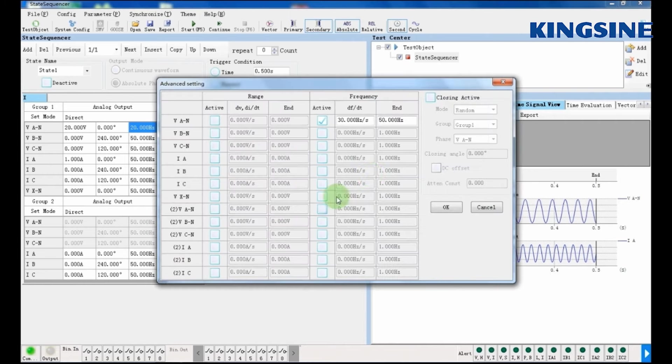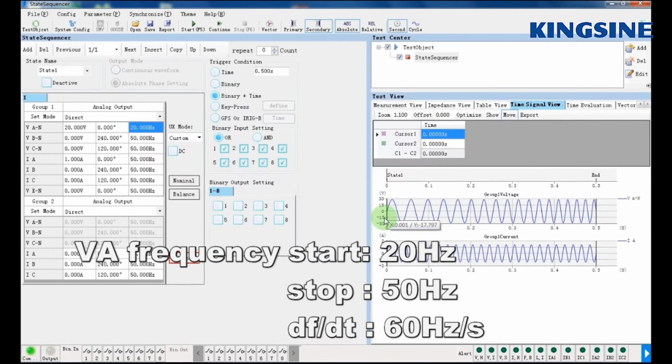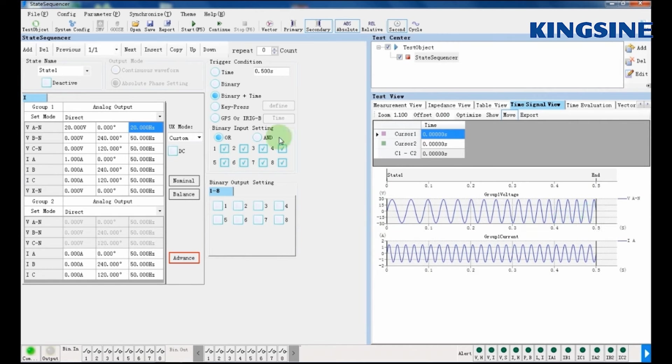Now, in advanced view, we are entering setting to increase a 20 Hz signal with DF by DT of 16 Hz per second. We have set time at 0.5 seconds.